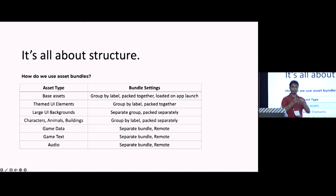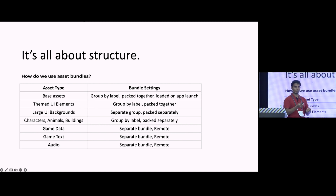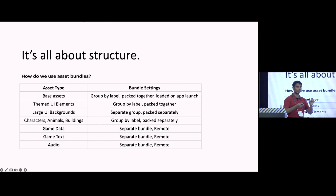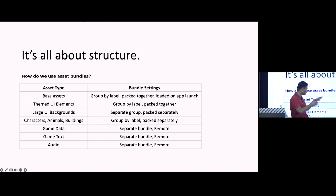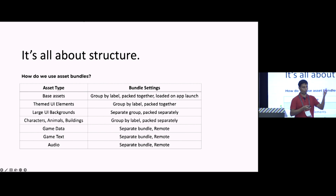Third, large UI backgrounds like intro pop-ups, reward screens — things you see only once or occasionally — pack them separately as individual bundles, because as soon as they're gone from the screen you need to unload them; they tend to be very heavy textures. Finally, things that go in and out of the screen — animals, buildings, characters — pack them separately so they're only loaded if they're active in the scene. We also use different bundles for text, audio, and game data.